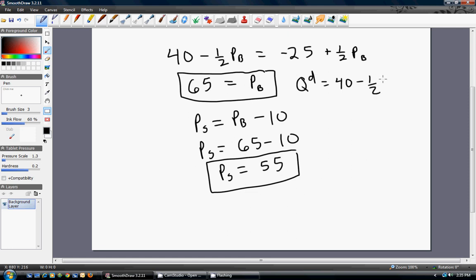And we can do that by substituting this 65 back into the demand equation. If you do that, you'll get 40 minus 32.5 or 7.5.